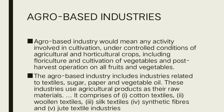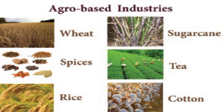Agro-based industries include those related to horticulture crops — cultivation of fruits and vegetables and converting them into preservatives, food processing, jams, and beverages. Agro-based industries include textile, sugar, paper, and vegetable oil industries, using agricultural products as raw material. They comprise cotton textile, woolen, silk, synthetic, jute, etc. We have an image here for a clear-cut distinction.